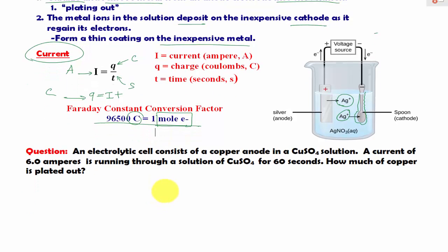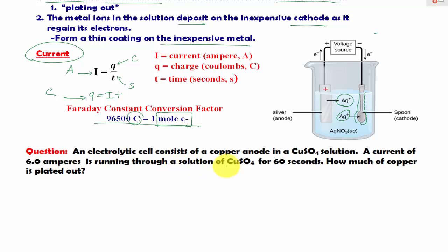For example, in this problem we have an electrolytic cell consisting of a copper anode in a copper sulfate solution. A current of 6 amps is running through the solution of copper sulfate for 60 seconds. How much copper is plated out?